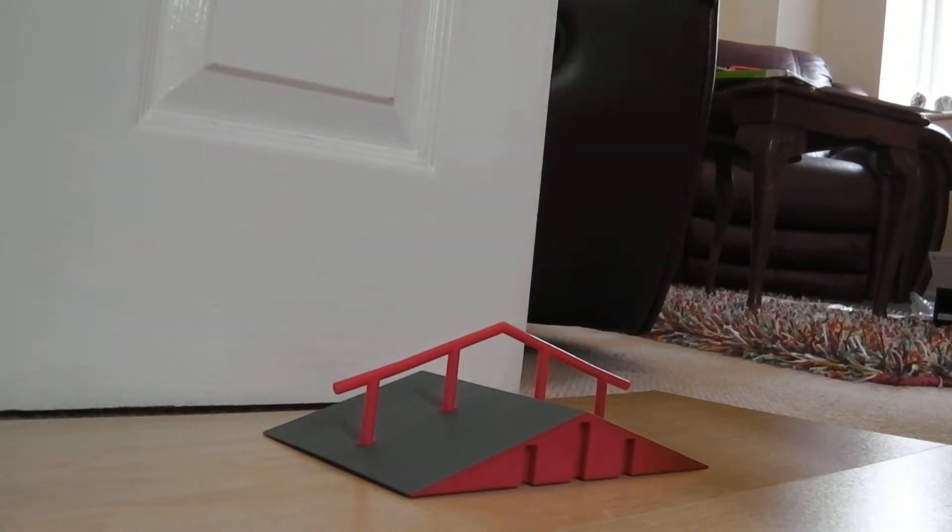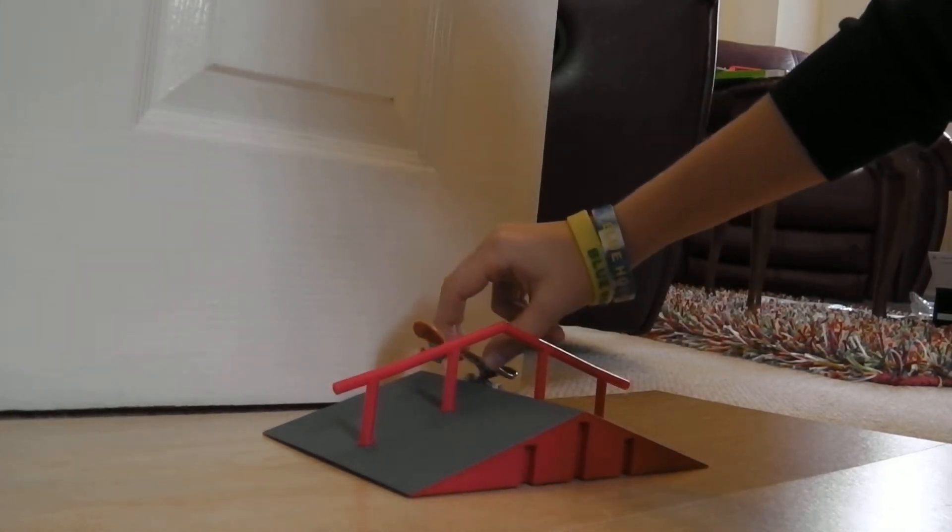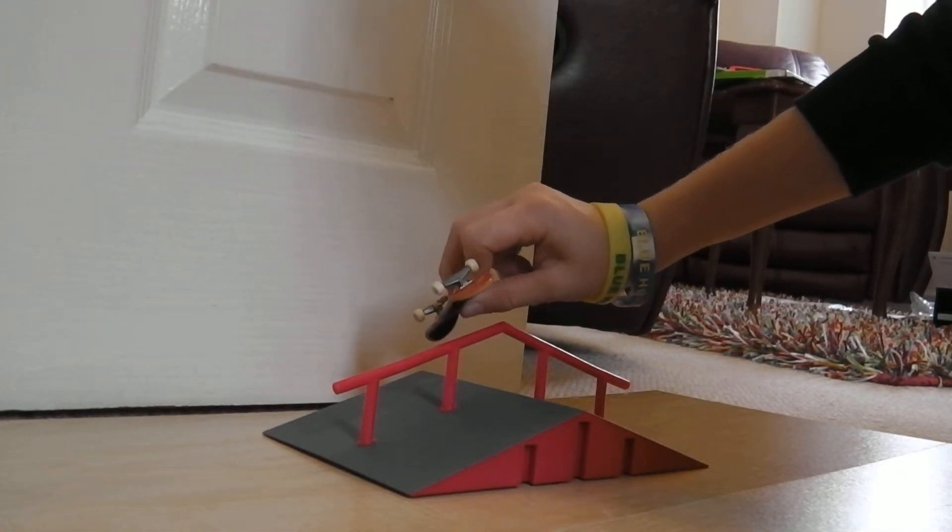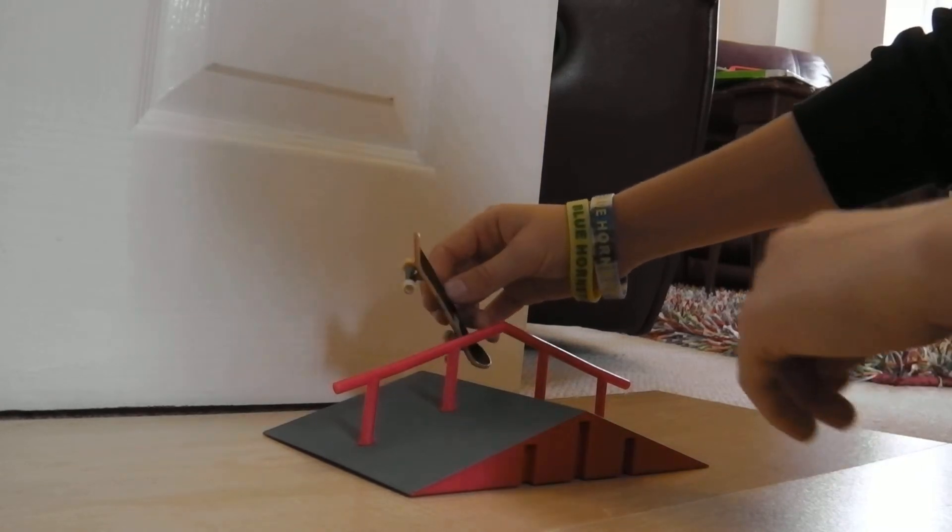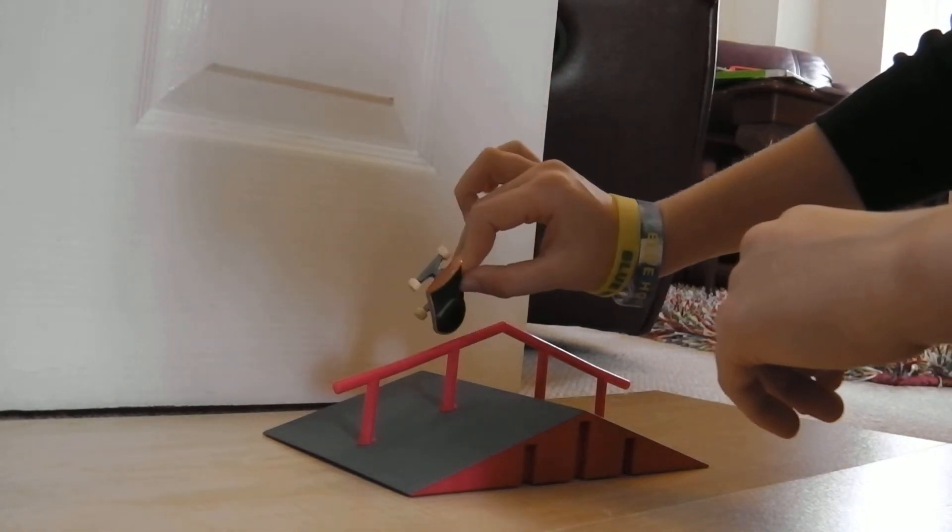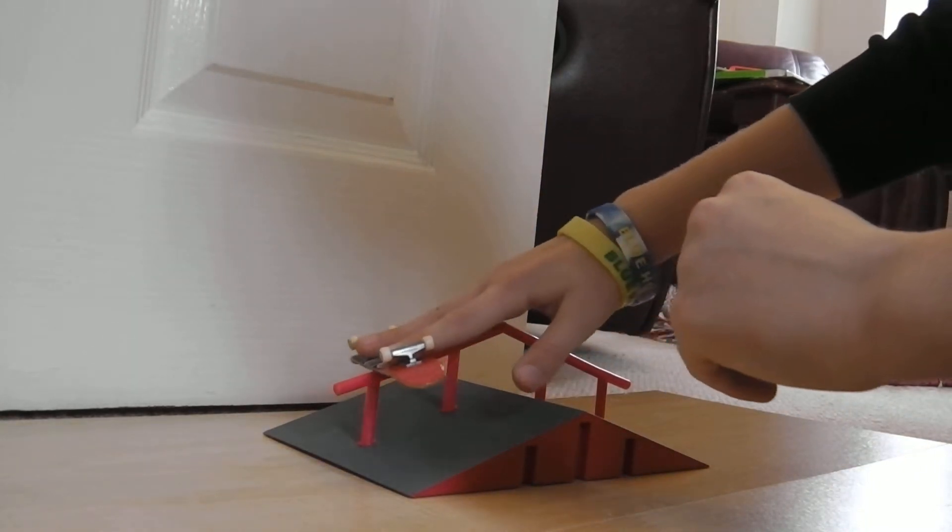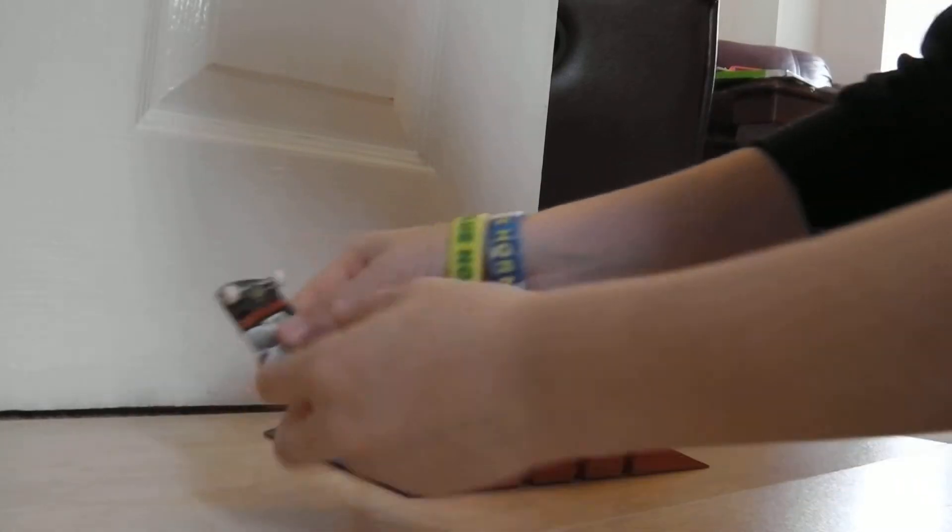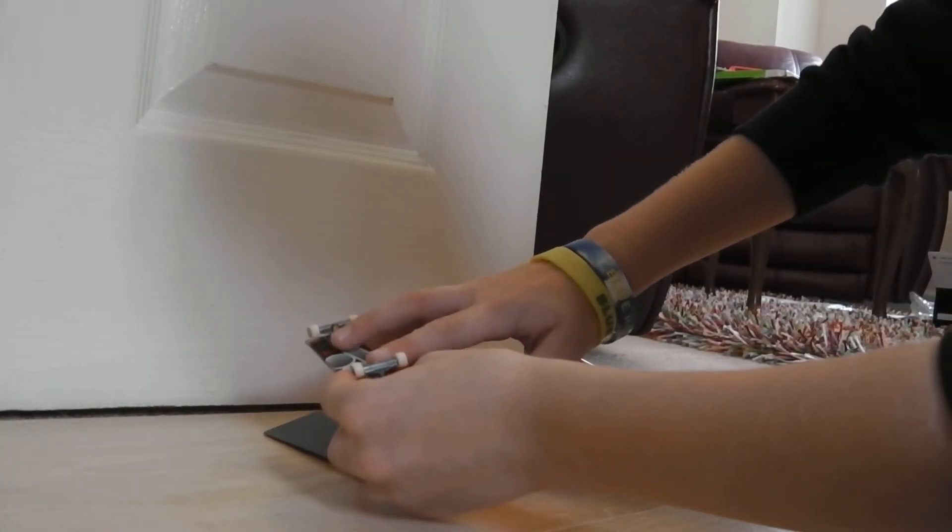Alright. The other grind I wasn't sure whether to do or not is the dark slide. The dark slide is probably the hardest grind. All you want to do is ollie, kickflip, no, half kickflip, land on your grip tape, grind, put your third finger underneath the board, flip it over, and land.